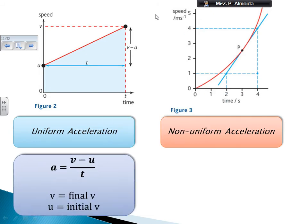For my uniform acceleration, it's really easy to calculate. I just do V minus U over T, where V is the final velocity, U is the initial velocity, T is the time taken for this change in velocity.